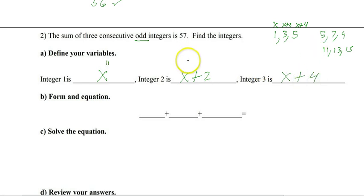Watch. Plug in 11. 11 plus 2 is 13. 11 plus 4 is 15. 11, 13, 15. Works every time. There it is. So now, what does it say there's a relationship between these three quantities? It says they have a sum that is 57. So x, x plus 2, x plus 4 is 57.